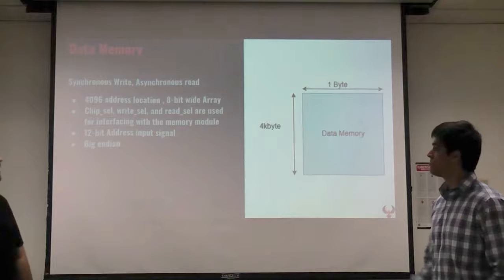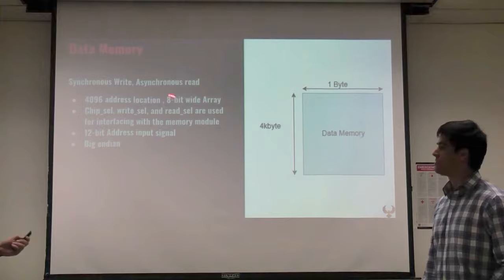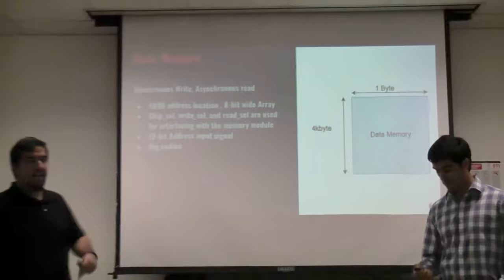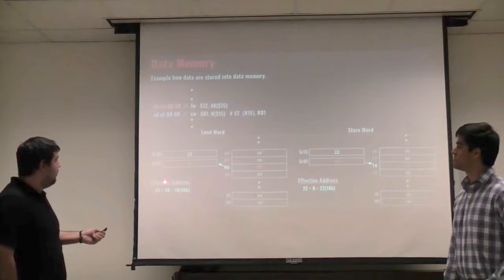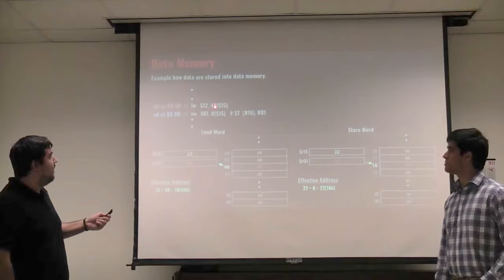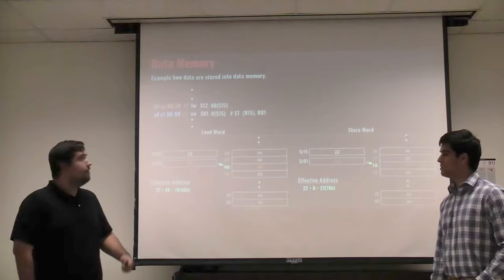The data memory is pretty much the same as the instruction memory, except you can think of it as an extension to the CPU as far as memory. You can read and write to it using load word and store word. This display shows how the load word instruction works and how to calculate the effective address: you load the contents of register R15 and add it to the immediate value, and that gives you the effective address for load word or store word.